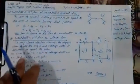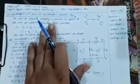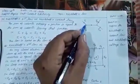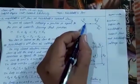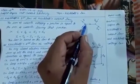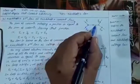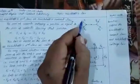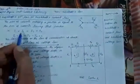Kirchhoff's Current Law is the first law. According to this law, the current entering a junction equals the current leaving that junction. What is a junction? The current entering a junction — we call this Kirchhoff's First Law.